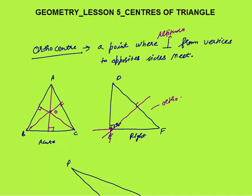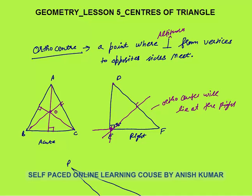Very important: in a right angle triangle, the orthocenter will lie at the right angle vertex. So in triangle DEF, the orthocenter lies at point E, which is the right angle.